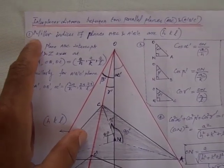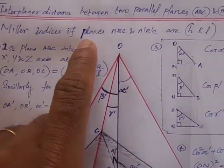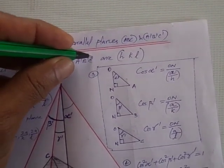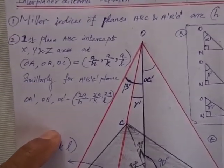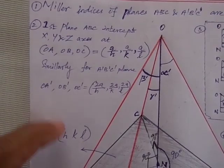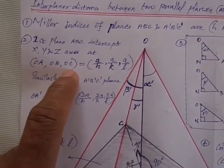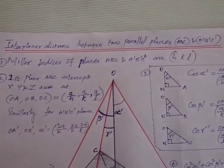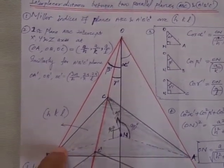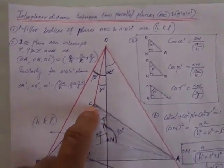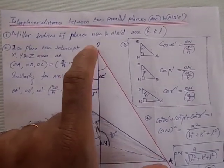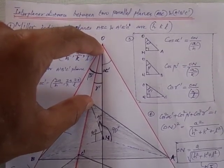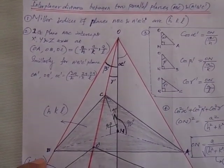The indices of planes ABC and A'B'C' are HKL. The first plane ABC intercepts the X, Y, Z axes at OA, OB, and OC, which are equal to A/H, A/K, and A/L. That is, plane ABC makes its intercepts on the X, Y, Z axes at points A, B, and C. The distances of these intercepts from the origin can be written using the Miller indices.